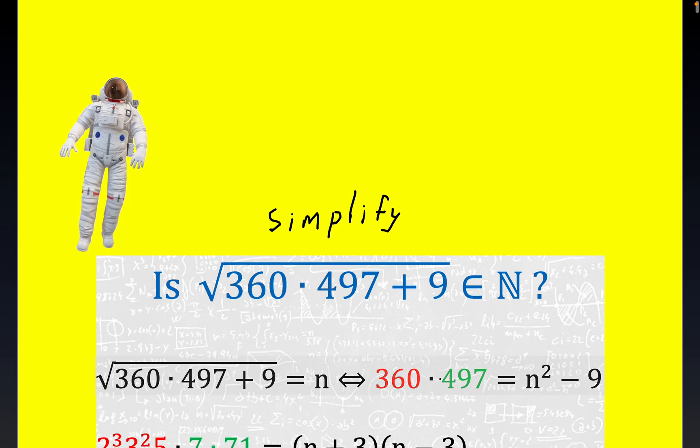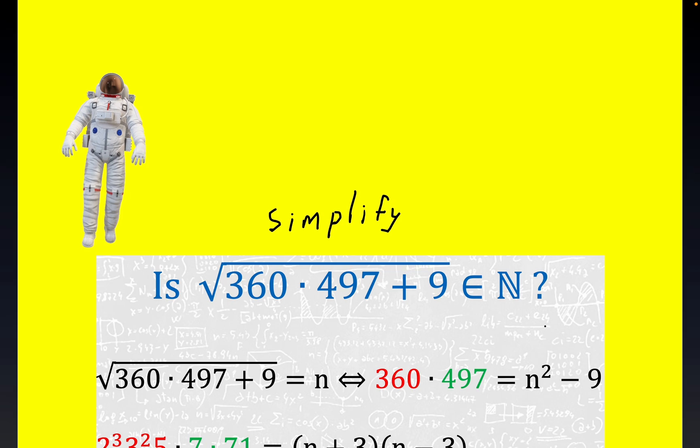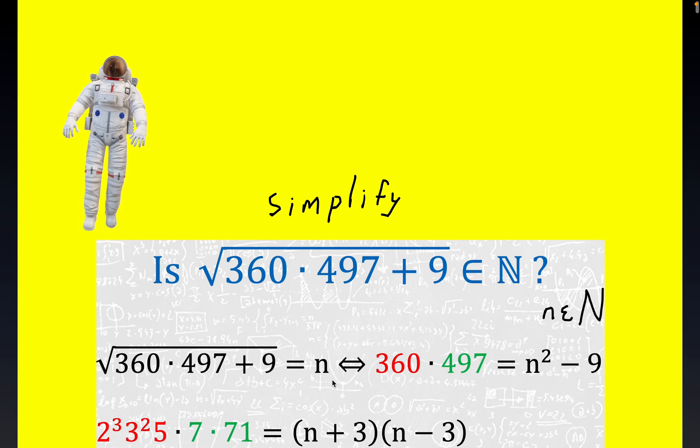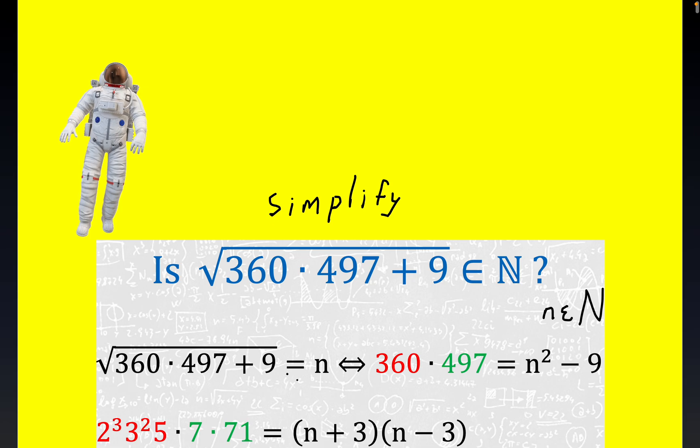Now, what we do is we make an assumption that it is an integer. Well, actually, we don't quite make that assumption. We can call it n, and if n turns out to be an integer, we have a nice answer, right? But the algebra would be the same, more or less, whether it's an integer or not. So n is a natural number here, and this first line is fairly simple. If you square both sides and subtract 9, you get this statement right here.